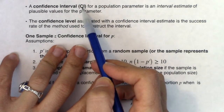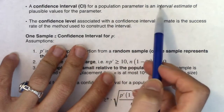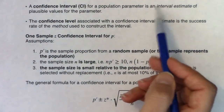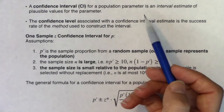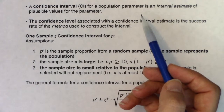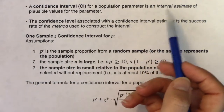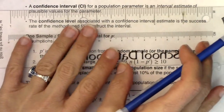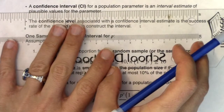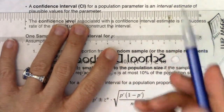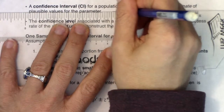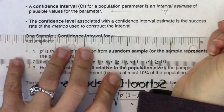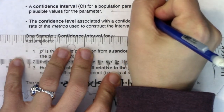A confidence interval, or CI, for a population parameter is an interval estimate of plausible values for the parameter. Notice this says interval estimate — through examples one and two we talked about point estimates, one number at a time. Interval estimates are a range of numbers. Let's use a p-prime axis to illustrate.